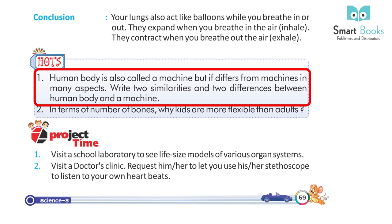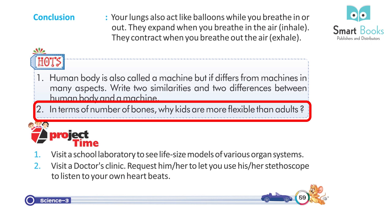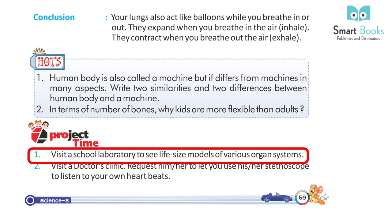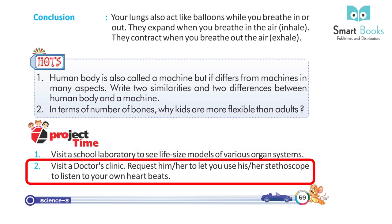Thought questions: 1. The human body is called a machine, but it differs from machines in many aspects – write two similarities and two differences between the human body and a machine. 2. In terms of number of bones, why are kids more flexible than adults? Project time: 1. Visit a school laboratory to see life-size models of various organ systems. 2. Visit a doctor's clinic and request to use a stethoscope to listen to your own heartbeats.